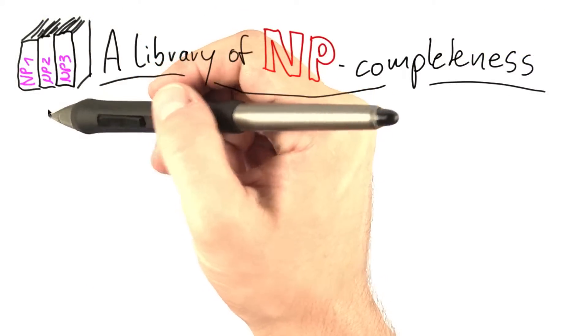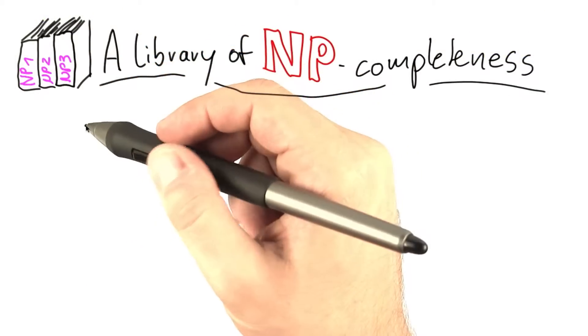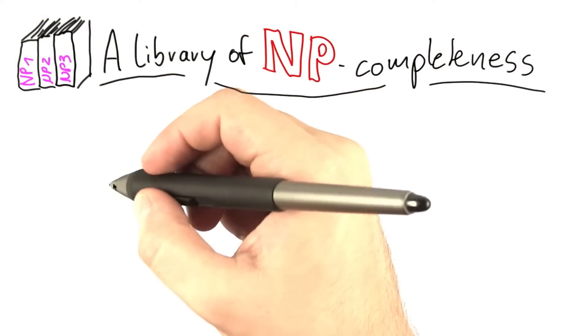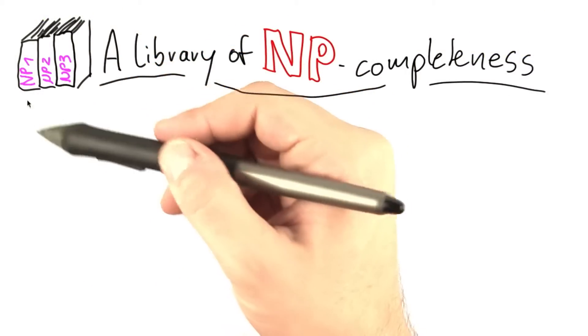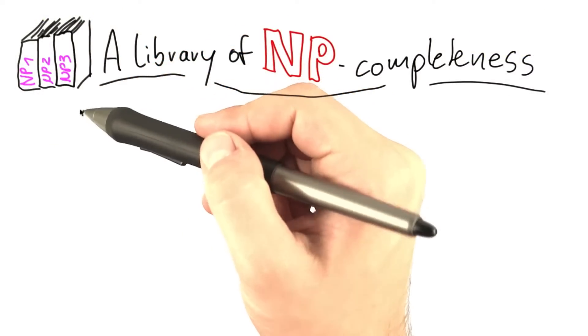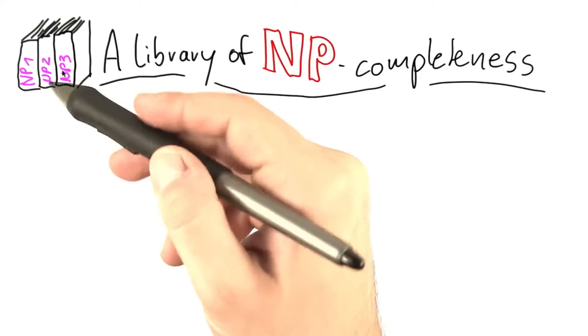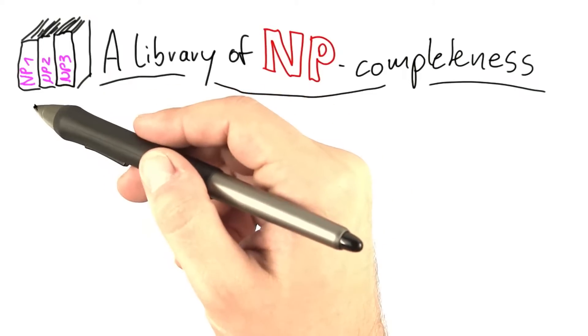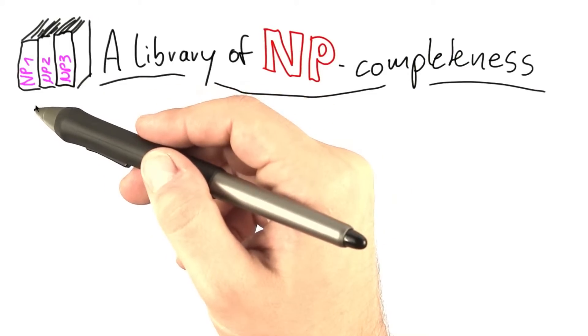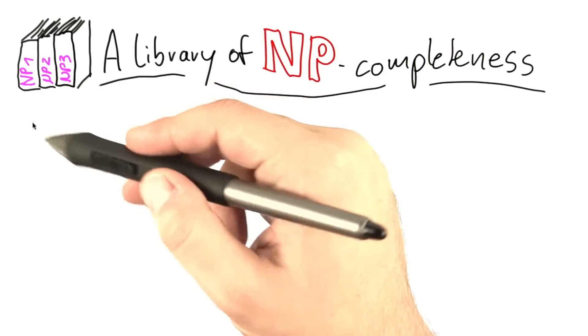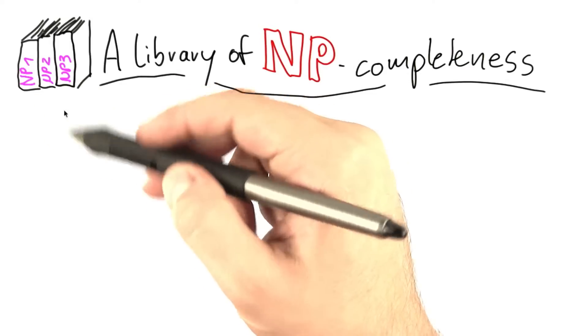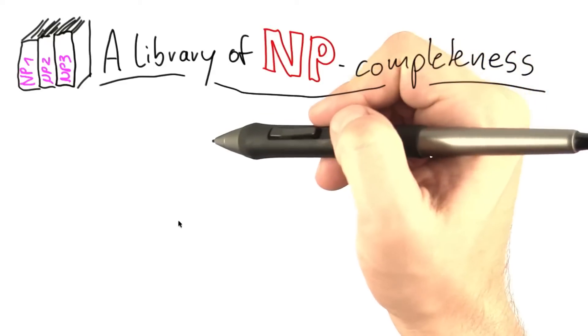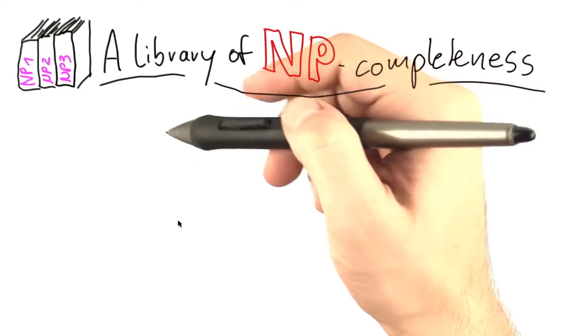The foundation for this library was laid by computer scientist Richard Karp, who in 1972 showed 21 different problems to be NP-complete. That was basically the starting point for this huge list of thousands of NP-complete problems.